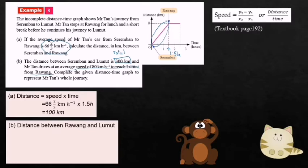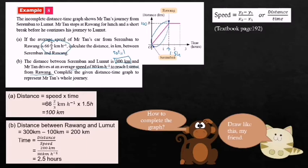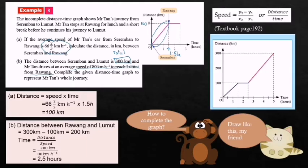Now we want to find the distance between Rawang and Lumut. Rawang is here. Just now we already got the distance from Seremban to Rawang is 100 km, so from Rawang to Lumut is 300 minus 100 km equals 200 km. Now we want to find the time used from Lumut to Rawang. The formula is time equals distance over speed. Distance is 200 km over speed 80 km per hour, so time equals 2.5 hours. You can draw the graph like this: from here you continue, 2.5 plus 2.5 is 5 hours. From this point at 2.5, 100 km, then draw a straight line to 300 km.